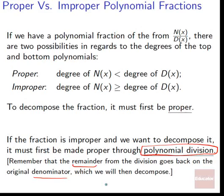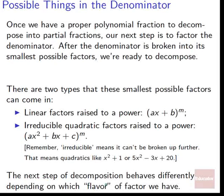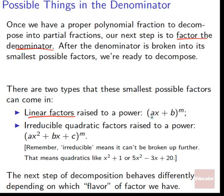Once we have a proper polynomial fraction to decompose, our next step is to factor the denominator. After the denominator is broken into its smallest possible factors, we're ready to decompose. There are two types these smallest possible factors can come in. They can come in linear factors, which are of the form Ax plus B, raised to some power M for multiplicity. So Ax plus B to the M.